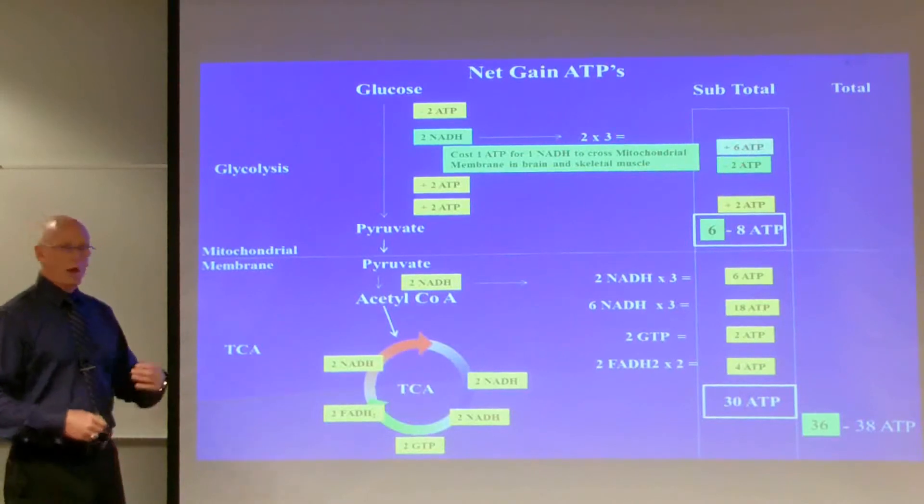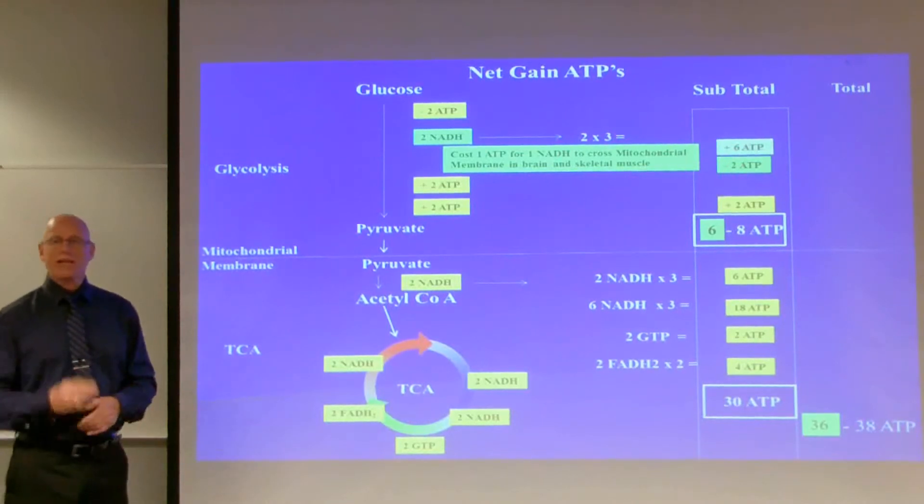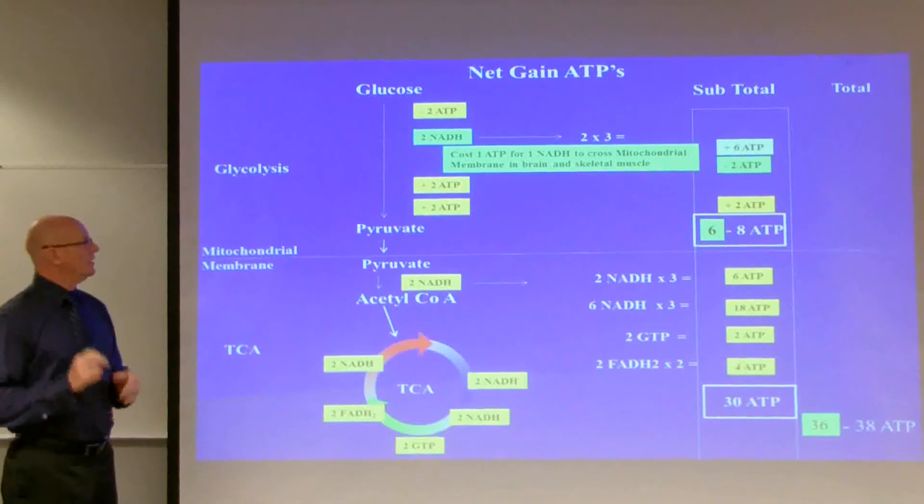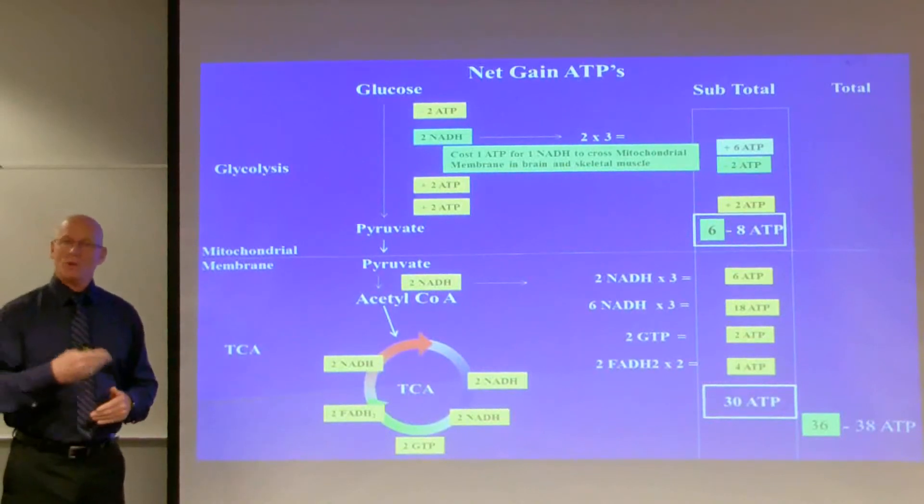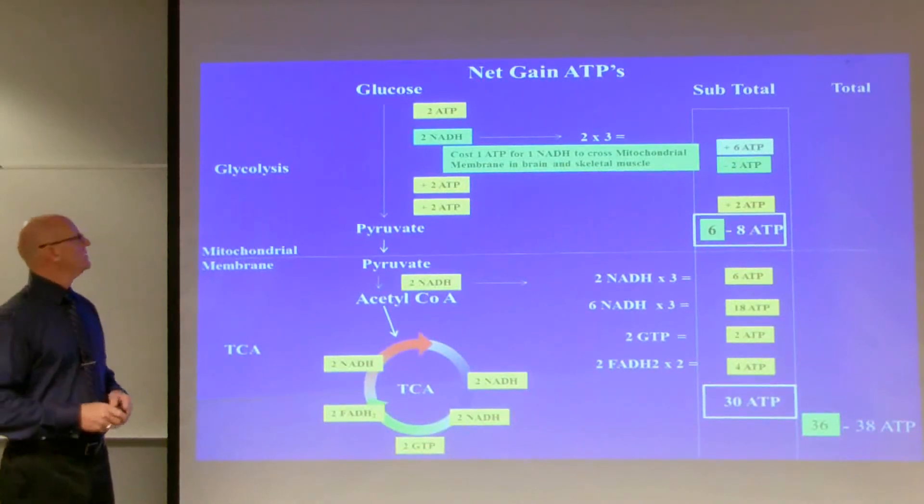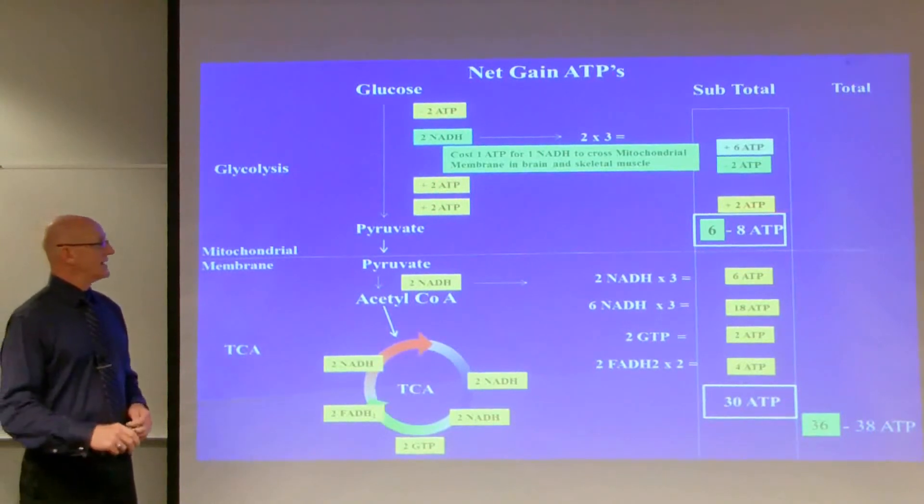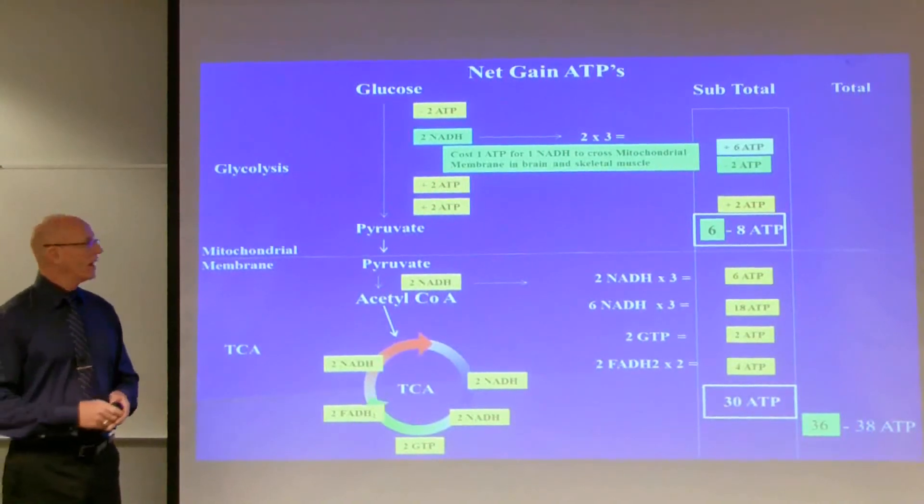So that will give us six ATPs once we get through the electron transport chain. And that's coming up, but I just want to maintain the count of the ATPs while it's still fresh. So in the payback phase of glycolysis, we gained two ATPs and then another two ATPs. And that was a total of four ATPs. But four minus two will give us an ATP gain of two ATPs in glycolysis.